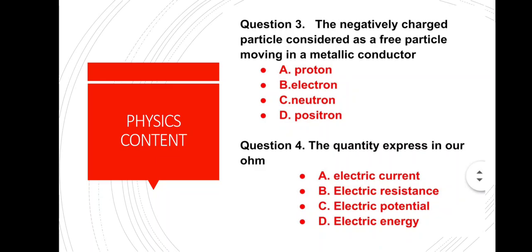Question number 4: The quantity expressed in Ohm. Options: electric current, electric resistance, electric potential, electric energy. The correct answer is option B — electric resistance is measured in Ohm. Electric current is expressed in ampere, electric potential in volt, and electric energy in joules.